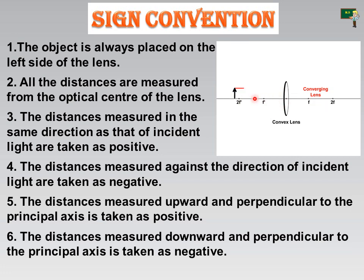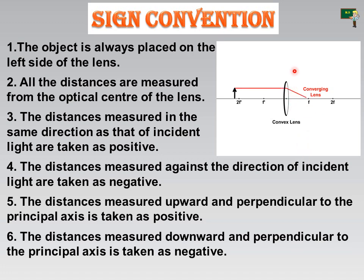This is the optical center, and all the distances are measured from the optical center, not at the curvatures. The distance measured in the same direction as that of the incident light is taken as positive. The distance measured against the direction of the incident light is taken as negative. The distance measured upward and perpendicular to the principal axis is taken as positive, and the distance measured downward and perpendicular to the principal axis is taken as negative. These are the six important points in sign convention.